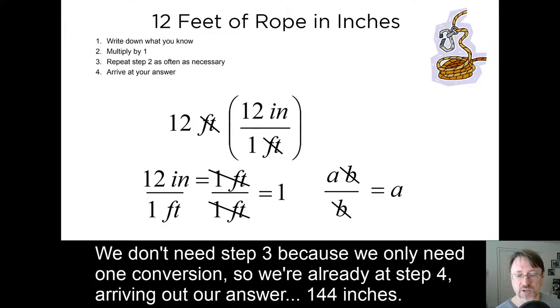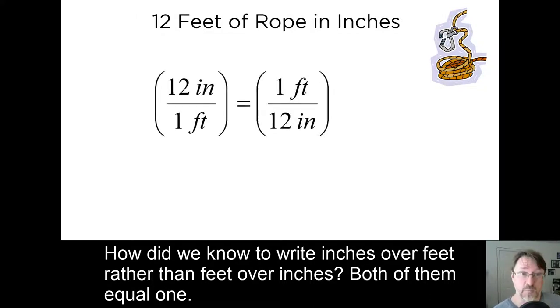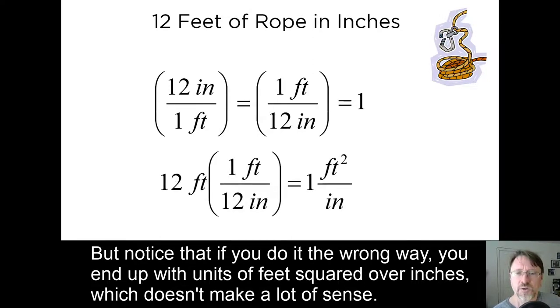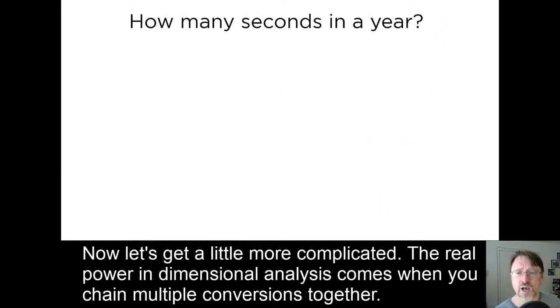We don't need step three, because we only need one conversion, and so we're already at step four, arriving at our answer, 144 inches. How did we know to write inches over feet, rather than feet over inches? Both of them equal one. But notice that if you do it the wrong way, you end up with units of feet squared over inches, which doesn't make any sense. Just arrange your conversion factors so that the units cancel, and you'll be fine.